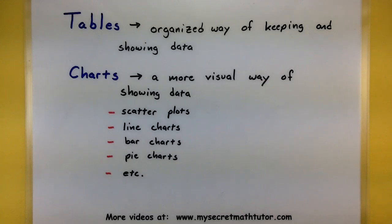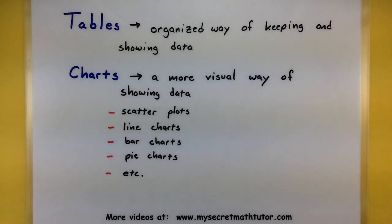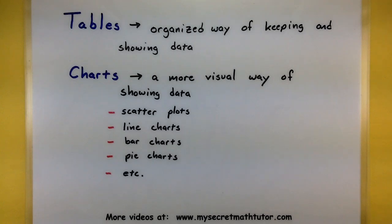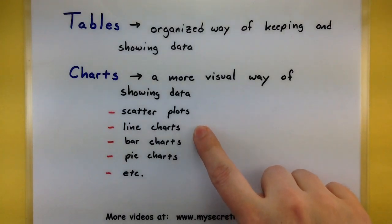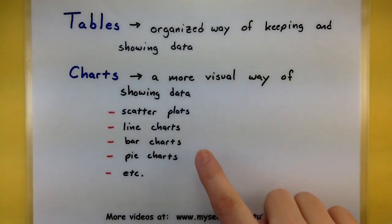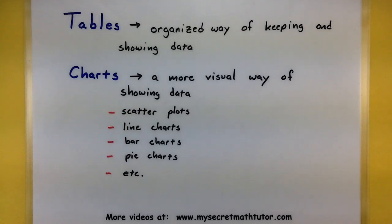In a table, these are essentially just organized ways of keeping and showing your data. Often times it's what we'll have a lot of the raw data in. In a chart, these are usually a little bit more of a visual way of showing that data. There are many different charts and plots you can use, such as scatter plots, line charts, bar charts, and pie charts — many ways to quickly look at the data and visually see what's going on.